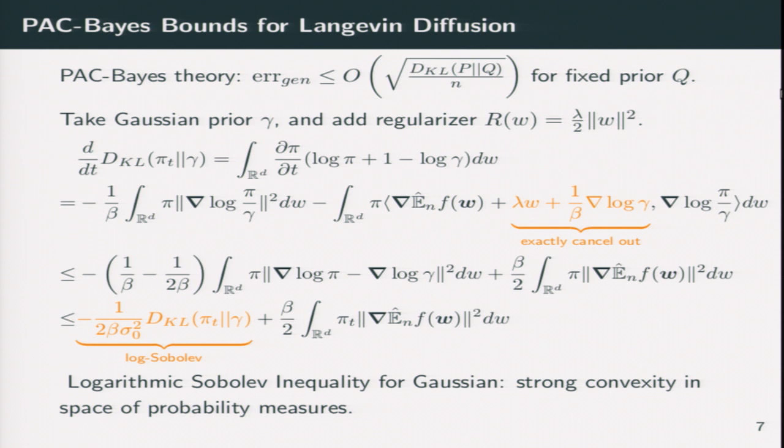And for PAC-Bayes theory, PAC-Bayes theorem tells us that the generalization error is controlled by the KL divergence between your output distribution and some fixed prior divided by N. And we take Gaussian prior here and we add some L2 regularization. This L2 regularization is actually essential here because in our calculation, here comes the term induced by the gradient of your Gaussian prior, which is, if we just accept this term, it will give you another dependence on norm of your parameter. So we cancel it with the L2 regularization term